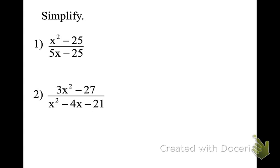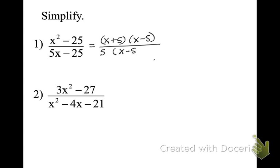The rules are: factor, then cross-cancel. In the numerator we have a difference of squares, so we factor to (X plus 5)(X minus 5). In the denominator the only way to factor is a GCF: pull out X, leaving X times (X minus 5). Now we cross-cancel the binomial (X minus 5) and we are left with (X plus 5) over 5. Remember we can't cross-cancel those 5's — we can't take a piece of a binomial.